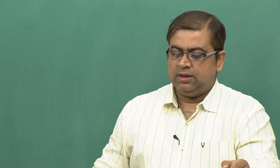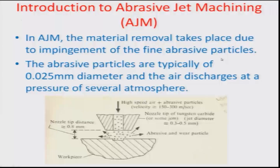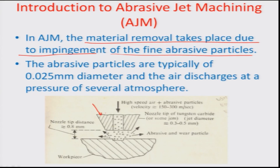Let us look into the process of abrasive jet machining, or AJM. In this particular process, material removal takes place due to impingement of fine abrasive particles. There is a nozzle made of a very hard material like tungsten carbide, which does not get easily influenced by continuous abrasion from flowing abrasive particles. A high-speed jet of air, with abrasive particles mixed in, flows out from this nozzle at a high velocity of almost 150 to 300 meters per second.